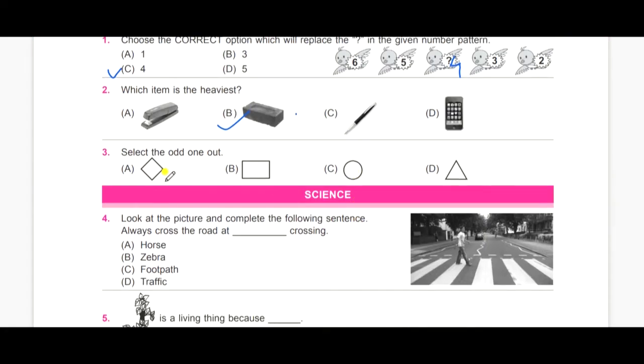Now the third one, select the odd one out. A, diamond, B, rectangle, C, circle and D, triangle. Yes, the correct answer is circle because all the other shapes have lines and only circles have more lines.